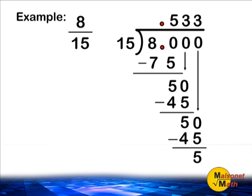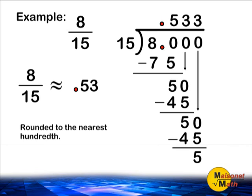In this case, I am going to round this value to the nearest hundredths place. Sometimes you may be asked to round it to the nearest tenths place, or the nearest hundredths, and sometimes even the nearest thousandths place. But I am going to decide to round this decimal to the nearest hundredths place. Rounding to the nearest hundredths place would give us a value of 53 hundredths. So we can say that 8 fifteenths is approximately equal to 53 hundredths.